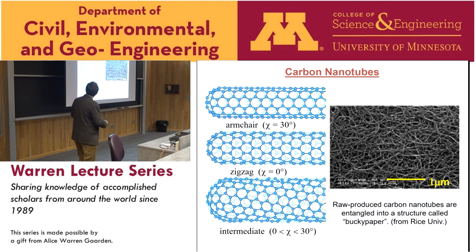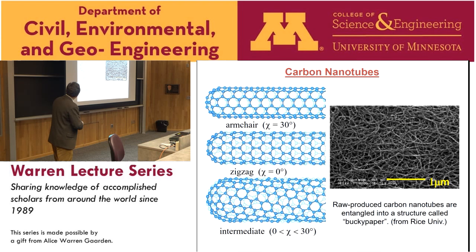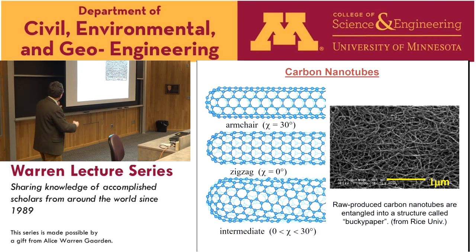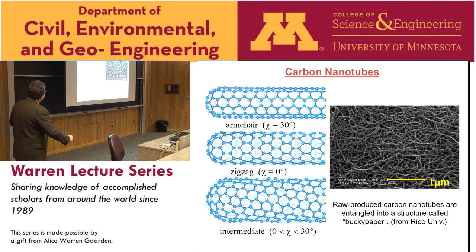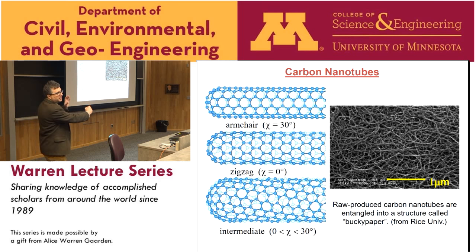Tubes are typically labeled by indexes N and M, which are the components of the circumference vector on the two lattice vectors. So we have not only diameter as an important factor, but also chirality. Tubes with chirality angle 30 degrees have bonds along the circumference; chirality angle zero means bonds along the tube axis. The three different bonds have different angles with the tube axis direction. To the right you see raw produced carbon nanotubes — this is a normal picture from the 90s and 2000s.